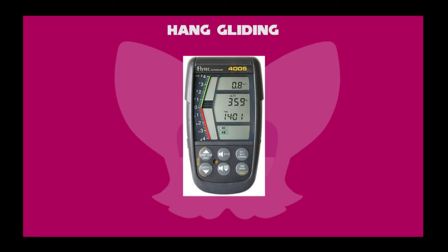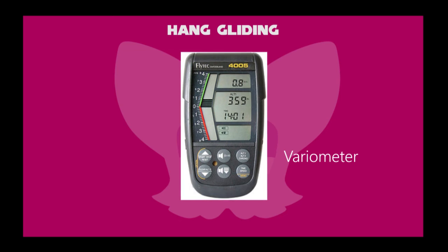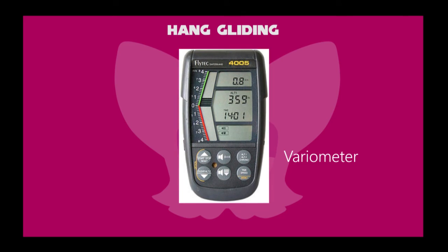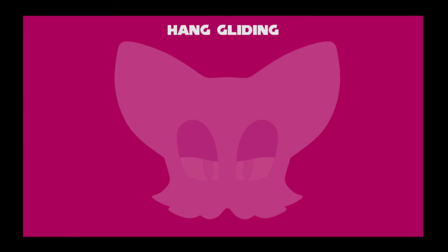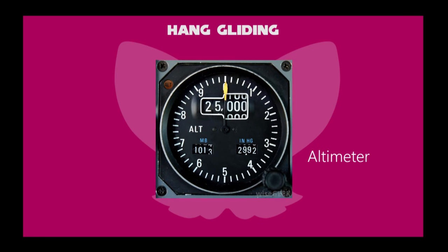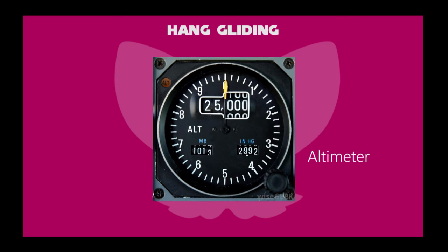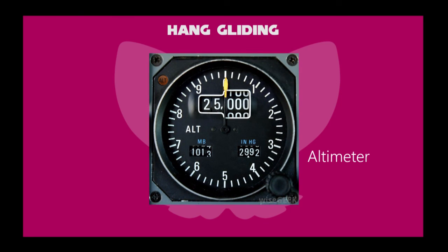Most of the pilots carry flight instruments, such as a variometer and altimeter. A variometer is a very sensitive vertical speed indicator that indicates climb rate or sink rate with audio signals and/or a visual display. An altimeter, on the other hand, is an instrument used to measure the altitude of an object above a fixed level, used in airplanes and helicopters.